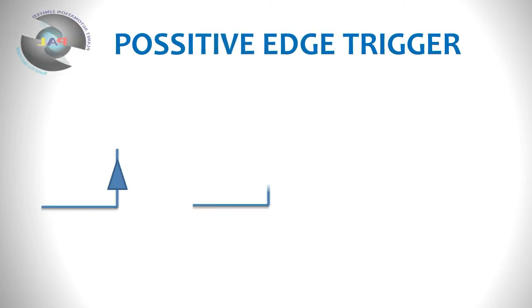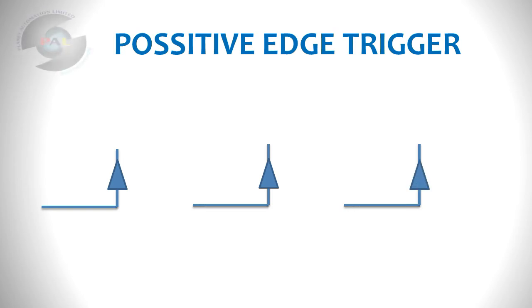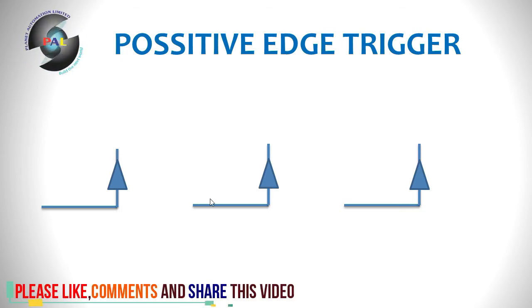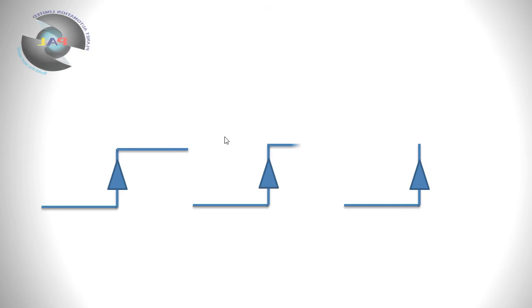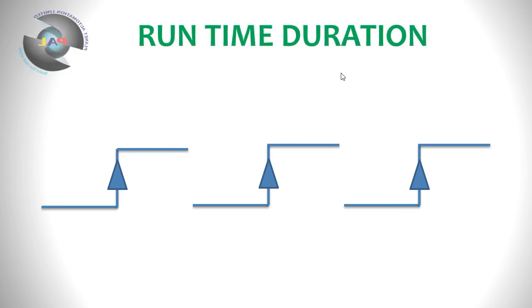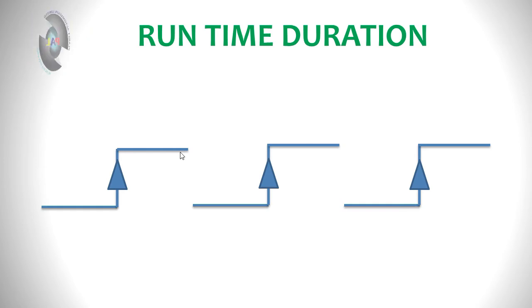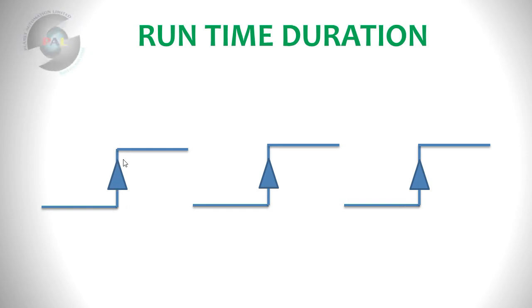For the positive edge trigger: you can see all outputs are at zero — this is the zero condition, the low state. The positive edge means the signal going from low to high. This rising transition is called the positive edge. The high time represents our working time in the plant — how long our load is active. The low-to-high transition is what we call the positive edge.